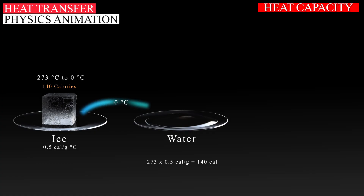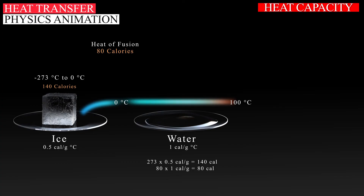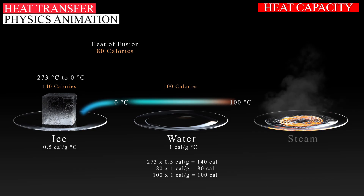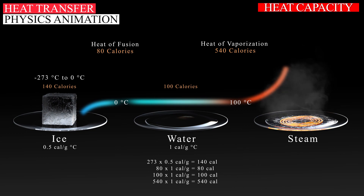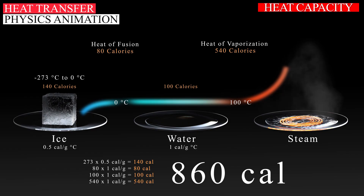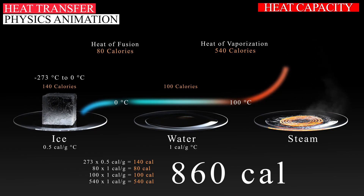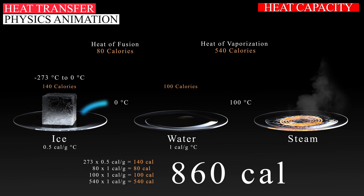The phase change of 1 gram of ice to liquid water requires 80 calories. Then to heat the water from 0 degrees Celsius to 100 degrees Celsius, with a heat capacity of 1 calorie per gram, would require 100 calories. The final phase change of 1 gram of boiling water to steam would require an additional 540 calories. Adding all of these values together yields 860 calories — the amount of heat energy it takes to transform 1 gram of ice at absolute zero to steam.